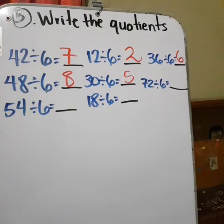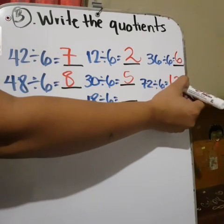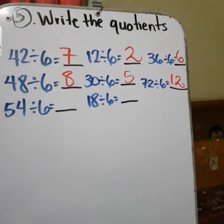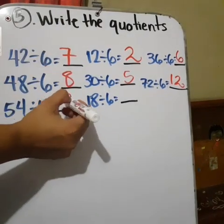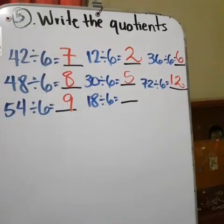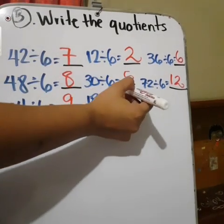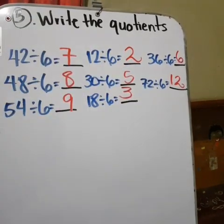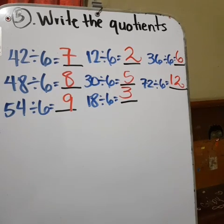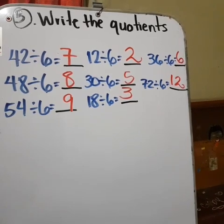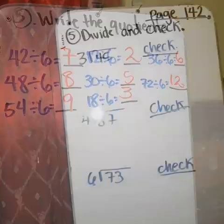Thirty divided by six. Five. Seventy-two divided by six. Twelve. Fifty-four divided by six. Nine. Eighteen divided by six. Three. How we know that? Because it's the six times table. You need to review the six times table. Tienen que repasar la tabla del seis. No se les olvide. Para dividir, tienen que practicar las tablas. Okay, guys.